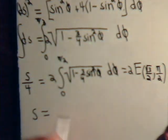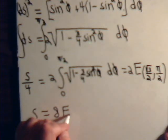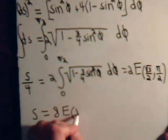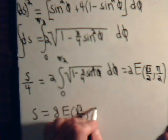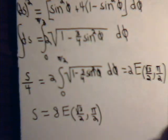So the total arc length going all the way around the ellipse, multiplying both sides by 4, that equals 8 times the elliptical function E of the square root of 3 divided by 2, pi over 2.